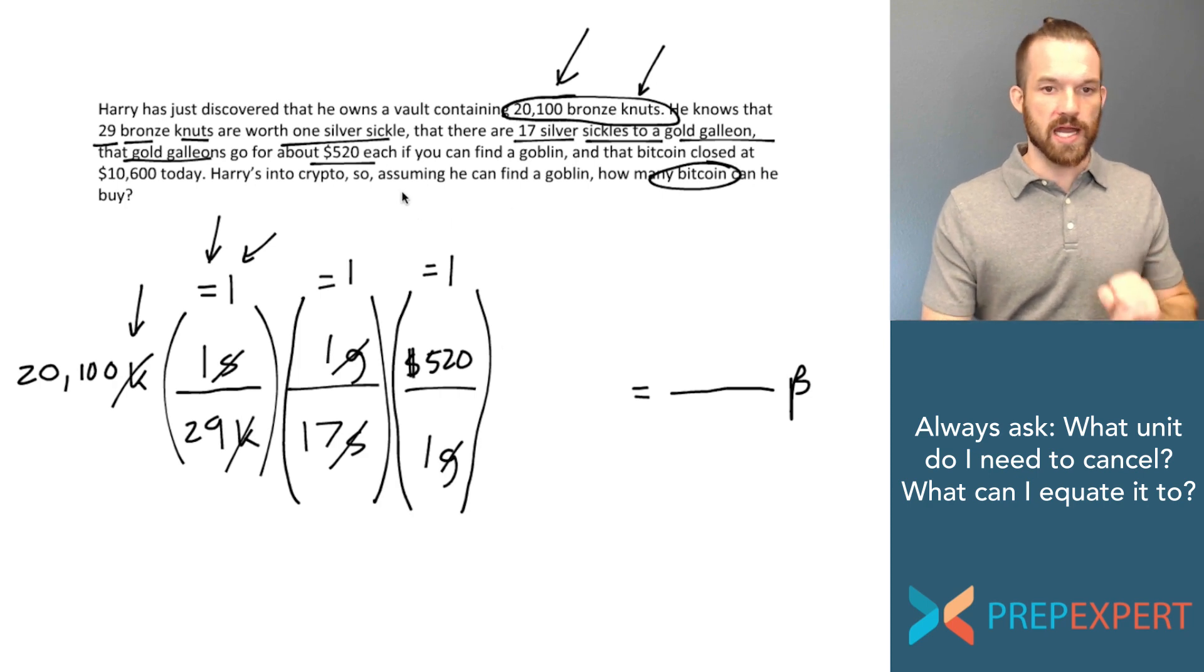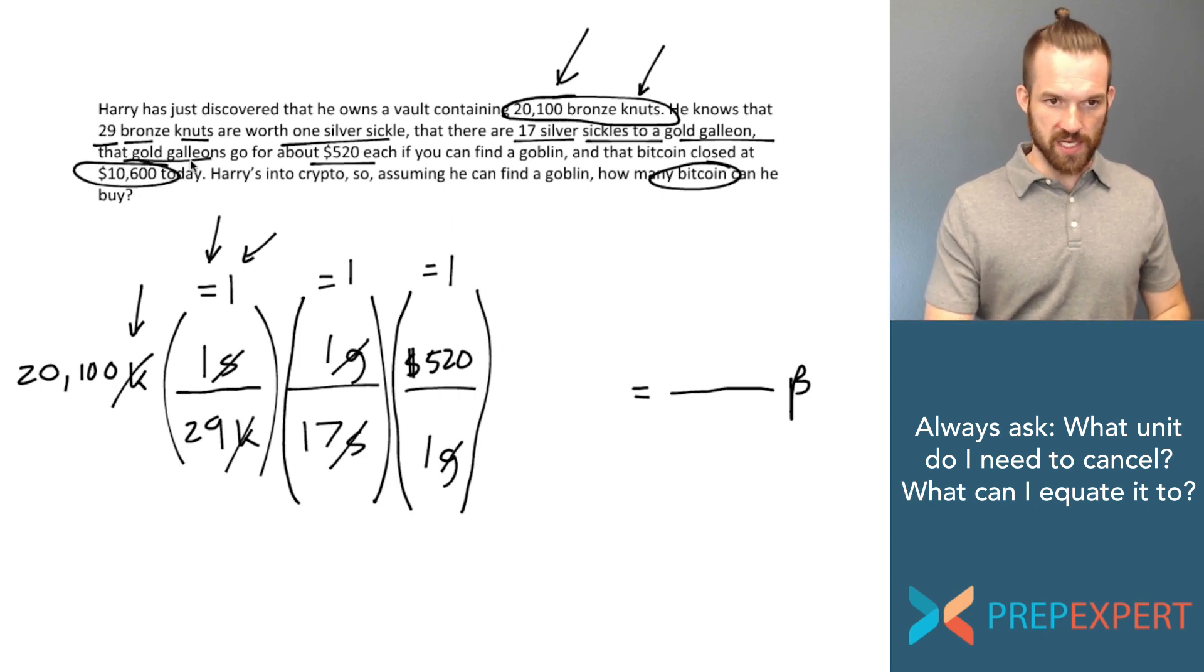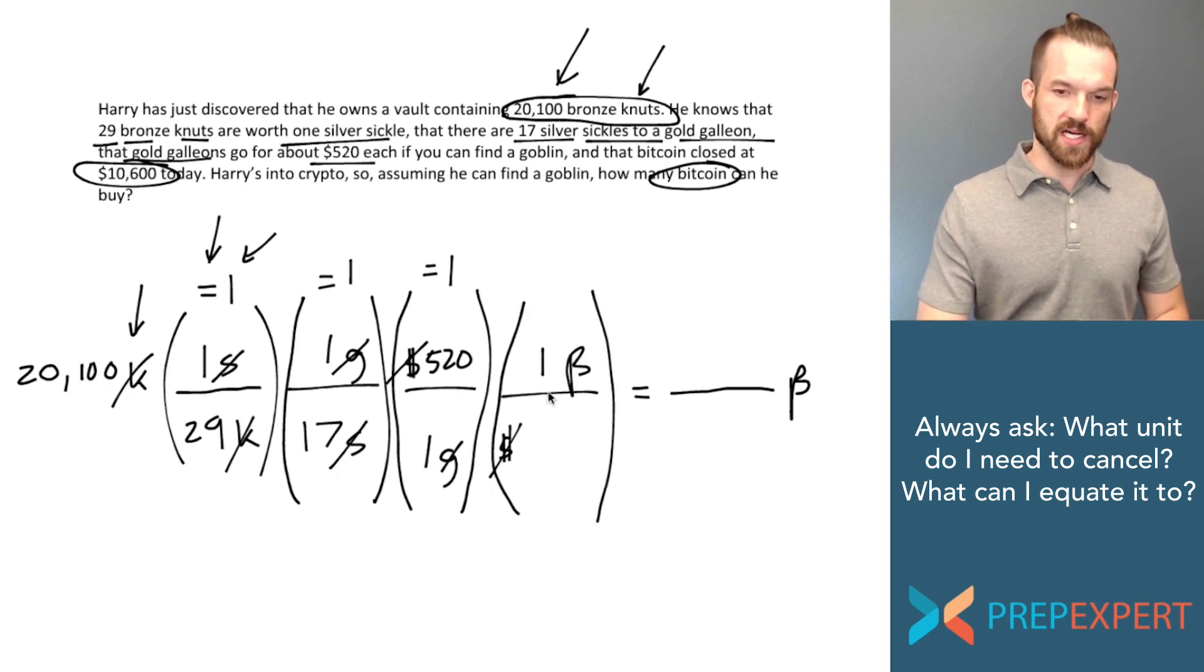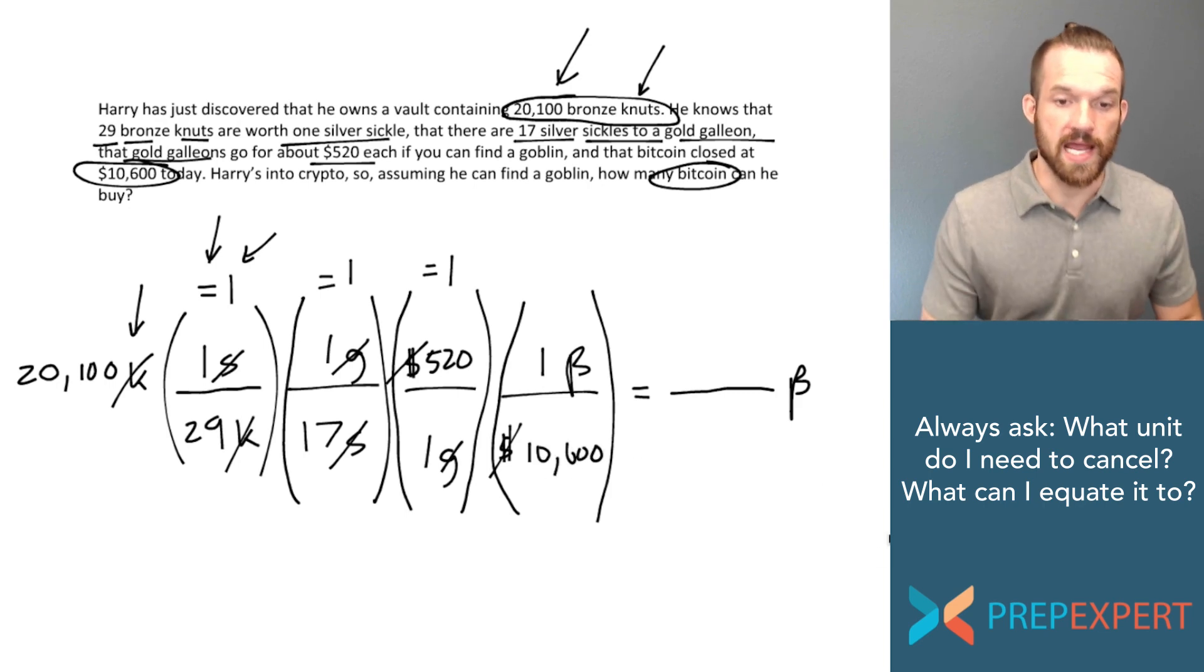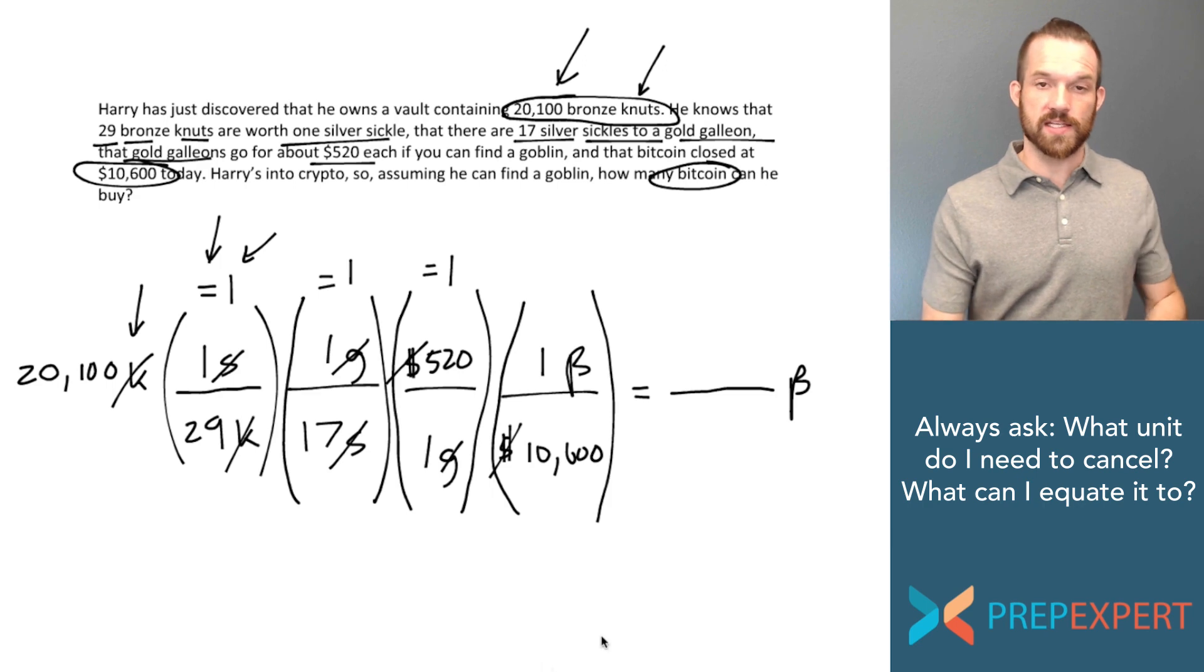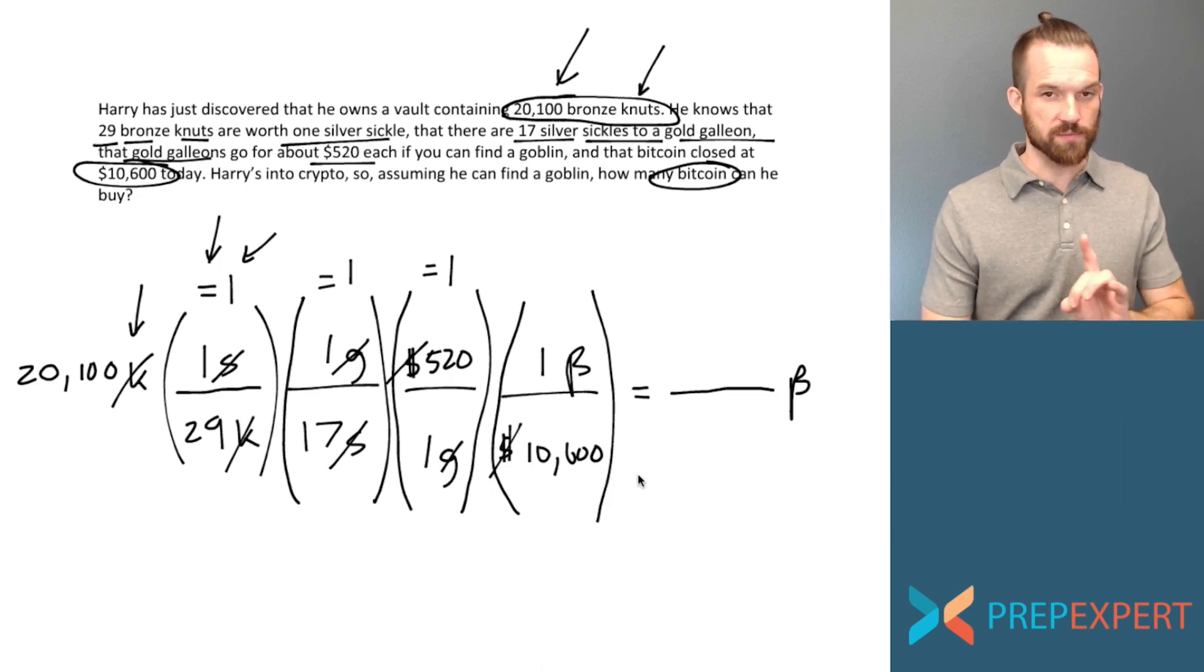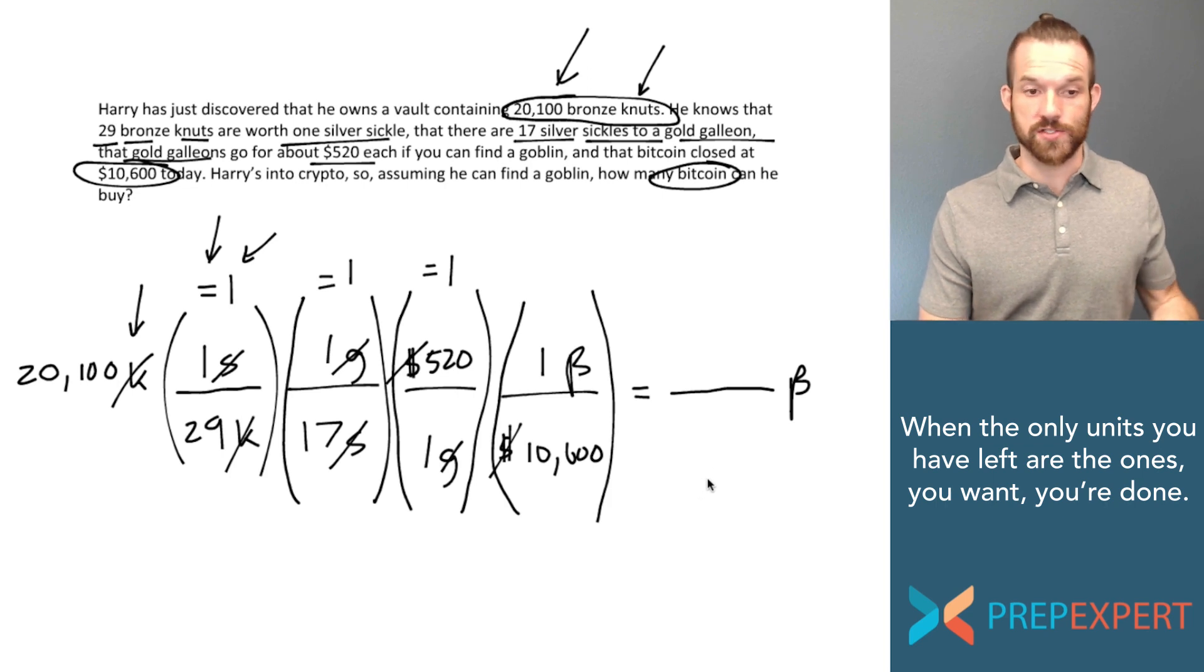I'm almost home. I know that I want to convert to Bitcoin and that one Bitcoin costs $10,600. So I'll put dollars in the denominator again so that they cancel. And I'm going to introduce Bitcoin into the numerator. So how can I equate these? I know that one Bitcoin is worth $10,600. Now I've canceled every unit in this multiplication that I'm doing except Bitcoin. So the only unit that I have left is Bitcoin and now I can just do the math.